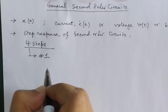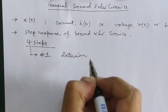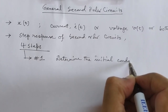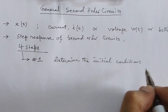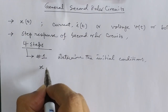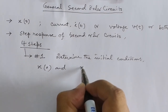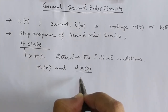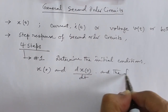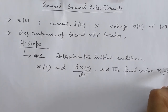Step number one: determine the initial conditions. The initial conditions are X at time T equal to 0, and the derivative of X at time T equal to 0 — that means dX/dt. These two, and also the final value, meaning X at time T equal to infinity.